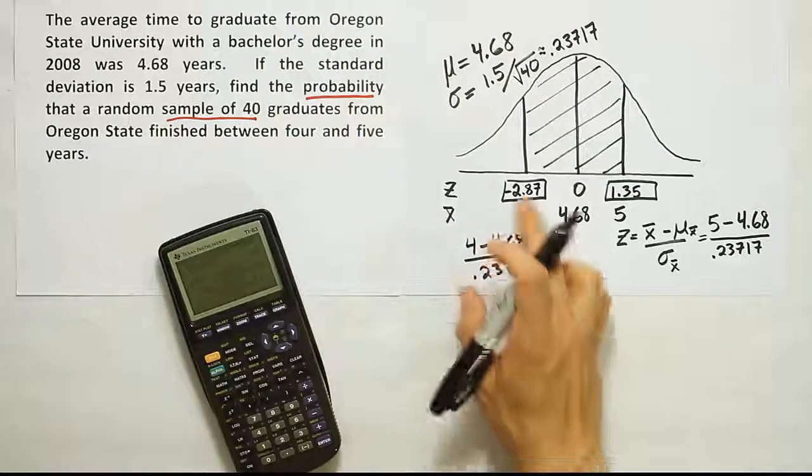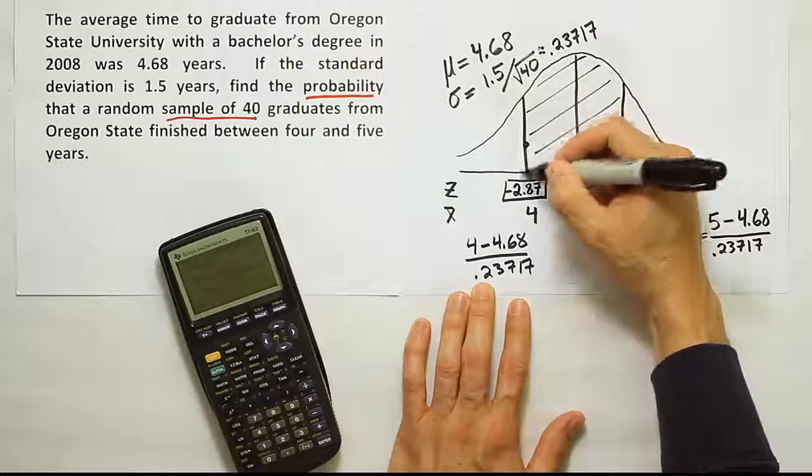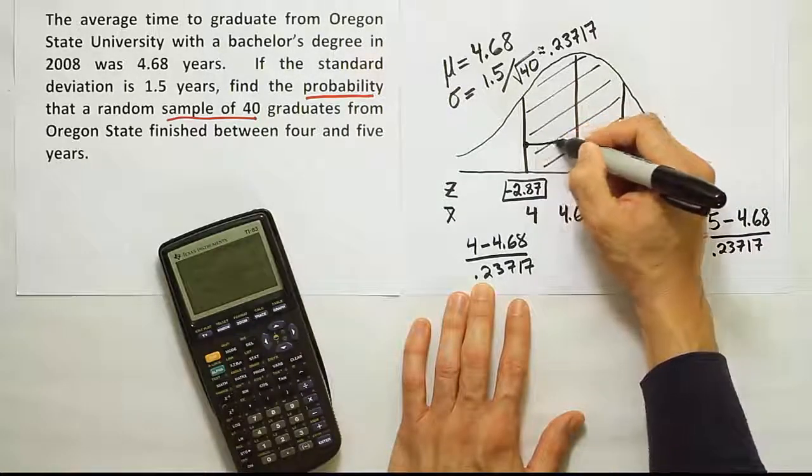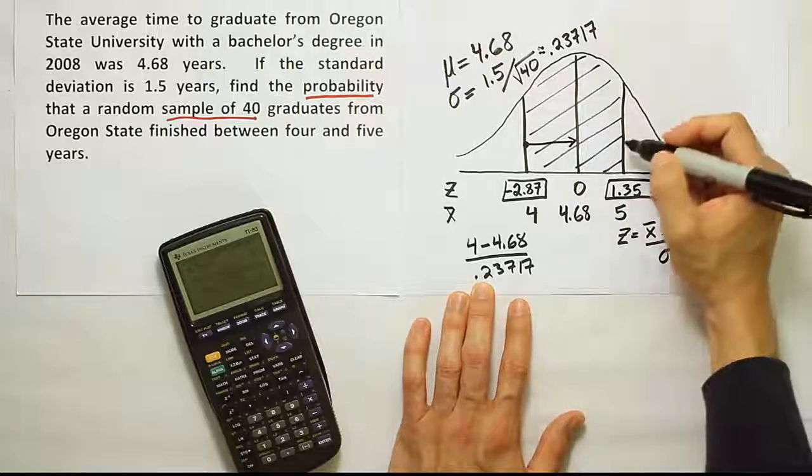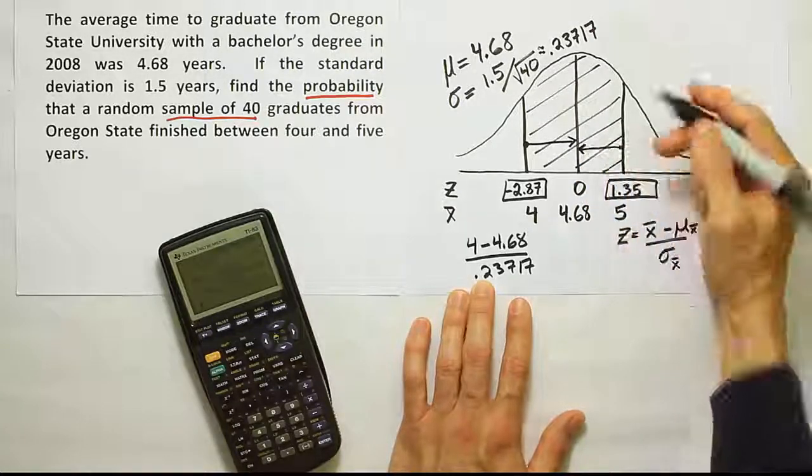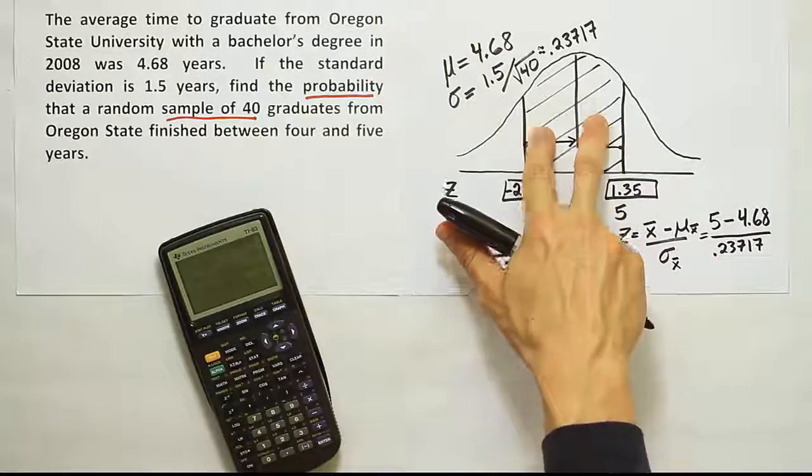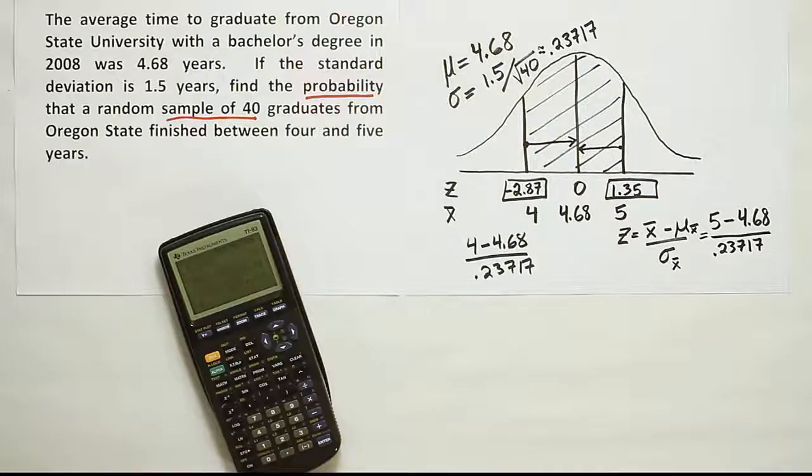Now that we have those two numbers, the next step is to look them up on the curve. So we'll look up on our z-chart, negative 2.87 to find the area from here to here. And then we'll look up 1.35 to find the area from here to here. Once we have those two areas, to get the total area, we'll add those two pieces together. And that'll give us the area for the whole shaded region. And that'll give us the solution to the problem.